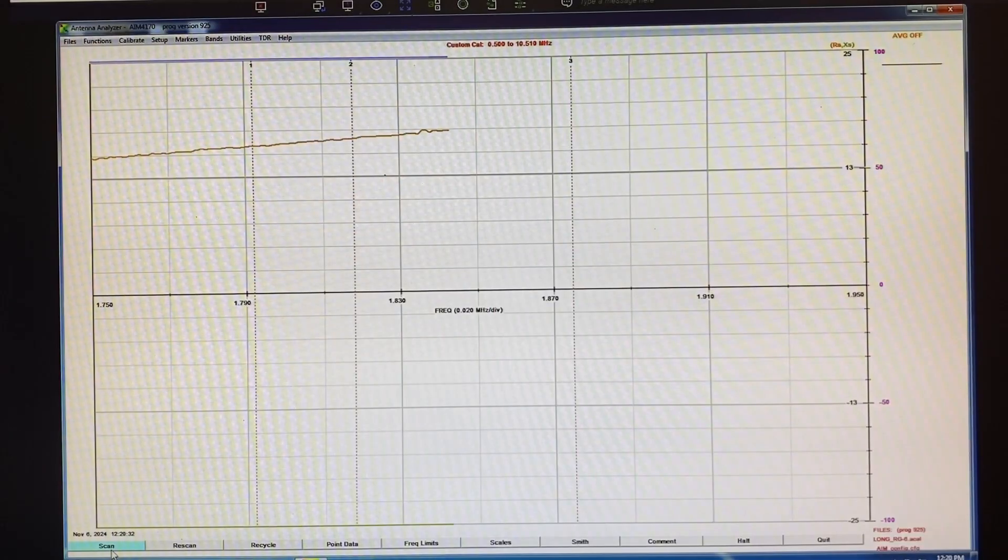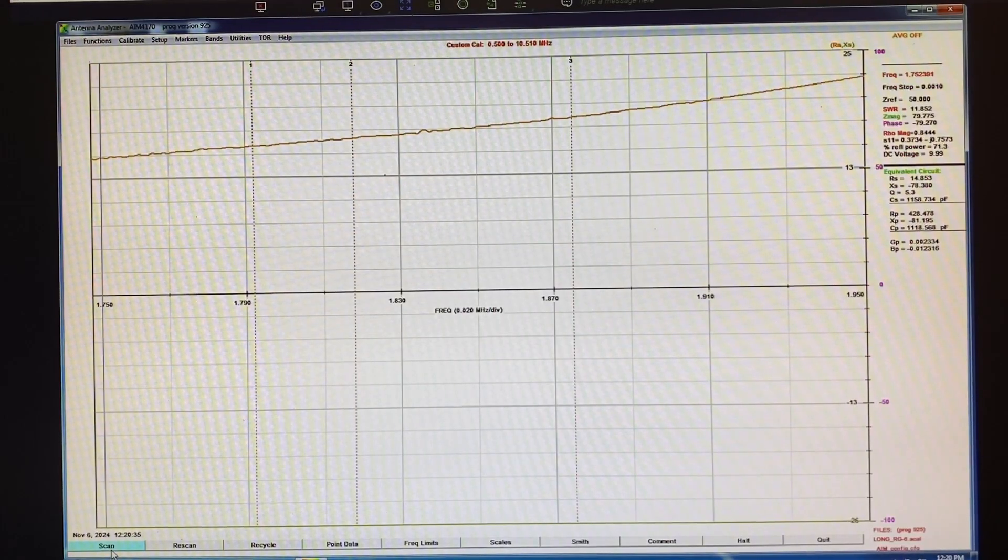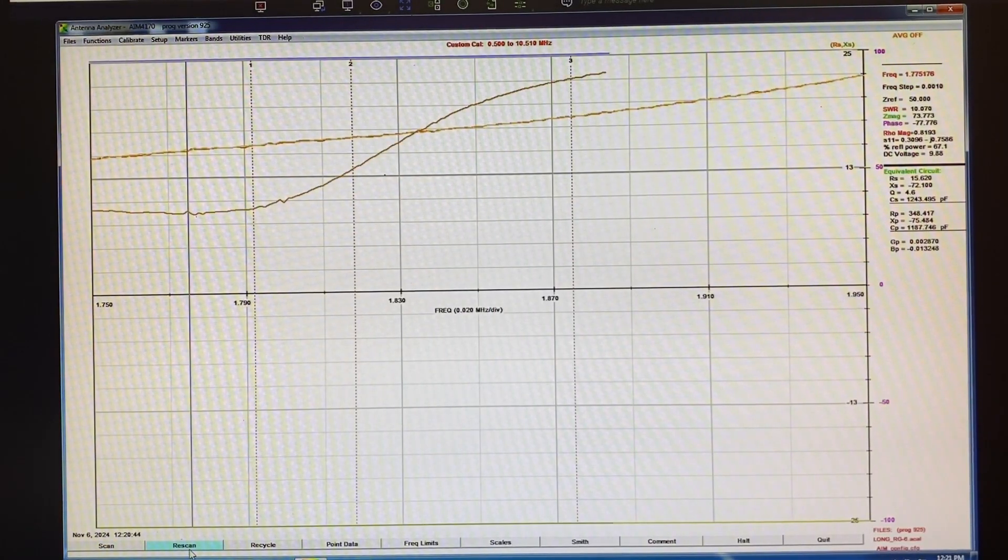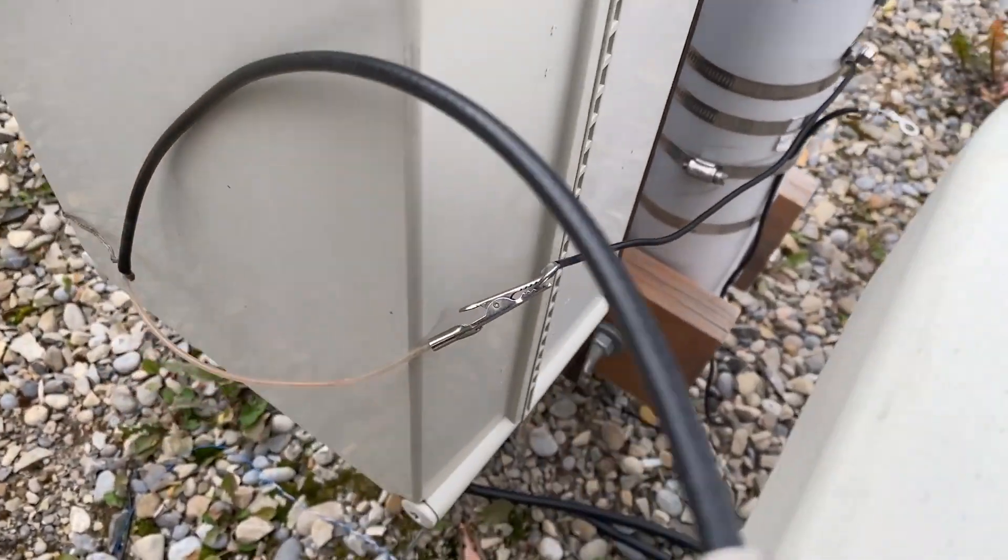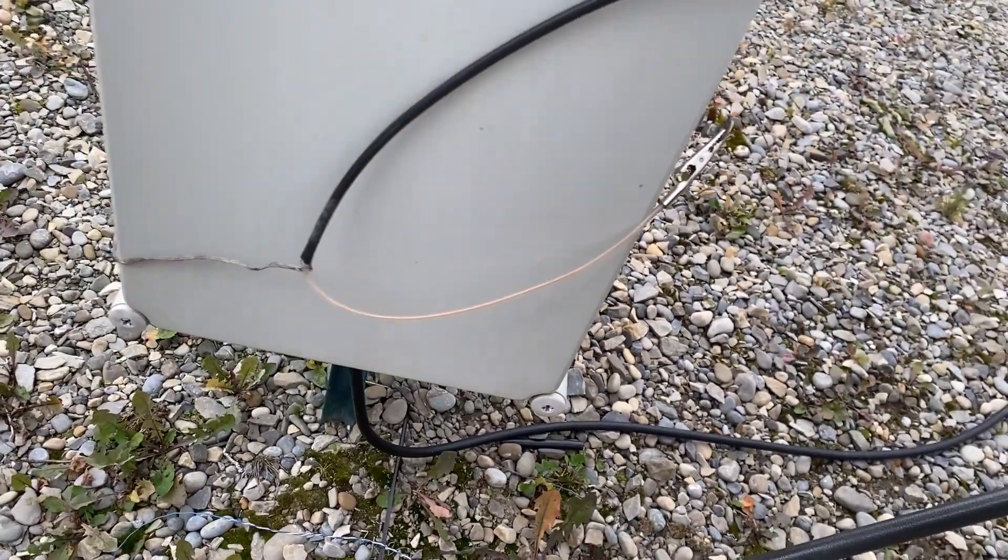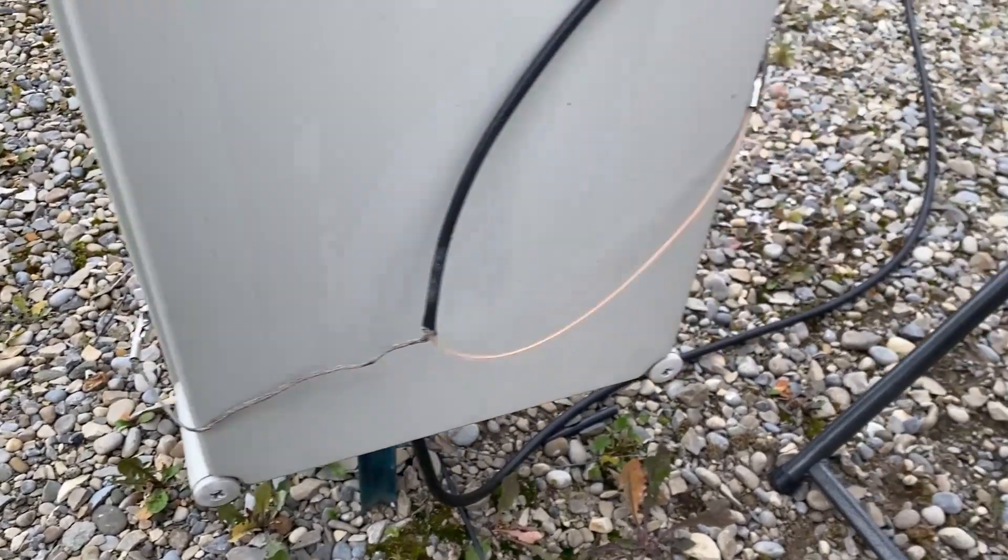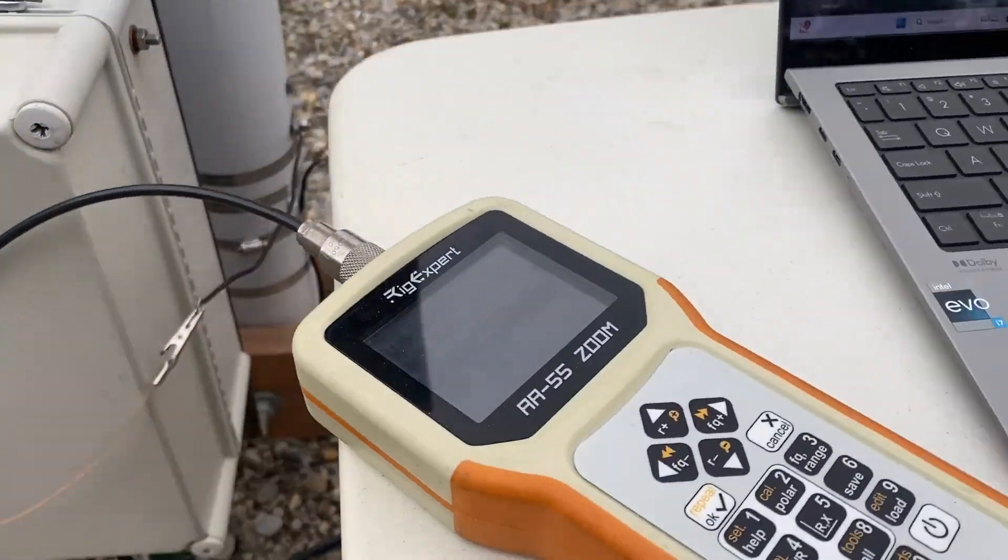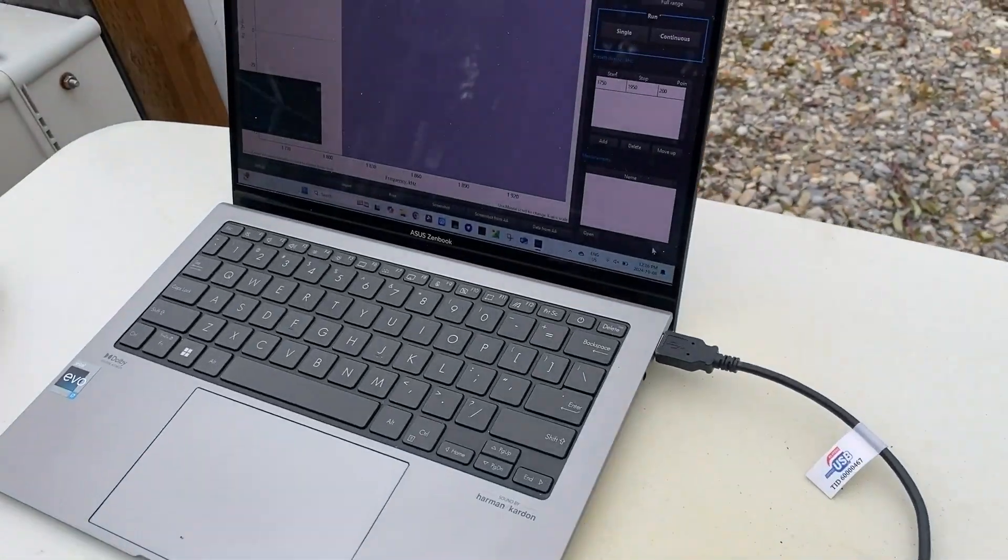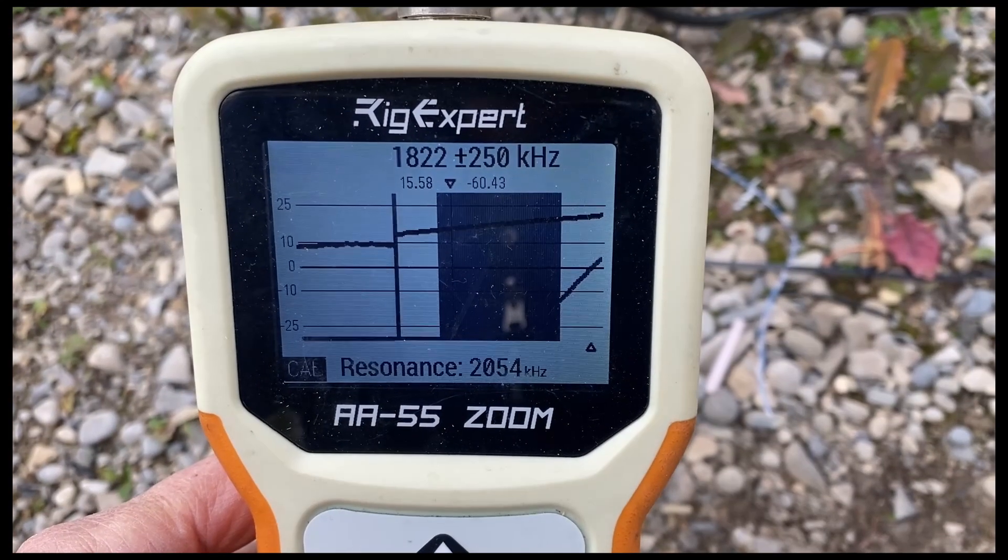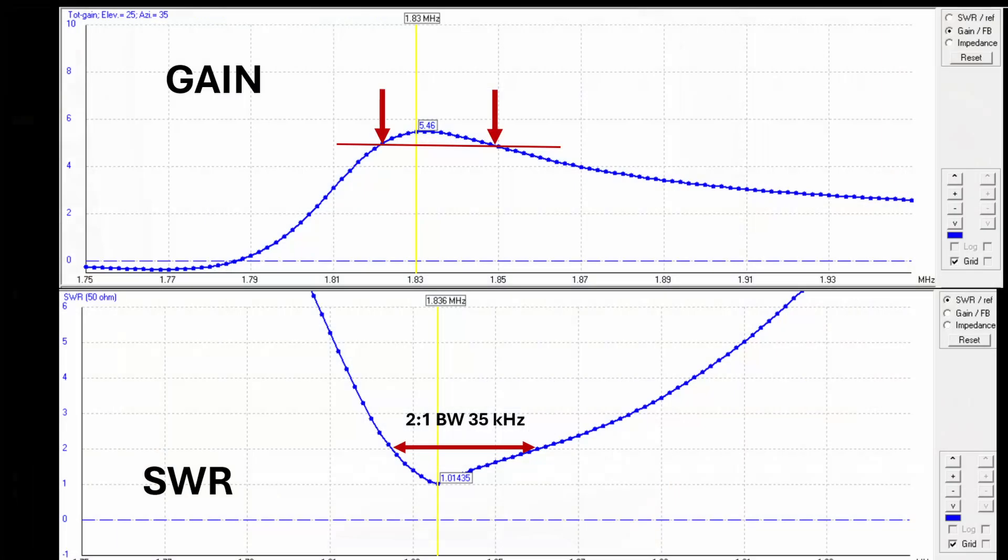This video is going to show how a parasitic array works. It explains what mutual coupling is and demonstrates it in the field. I'll show how by understanding this and using your analyzer in the field, you can tune any two or three-element Yagi or parasitic vertical array with confidence, without the need for relying on modeled values and multiple iterations of element tuning. Even if you don't plan on building a directive parasitic antenna, this video should help you understand how that Yagi works. Let's get started.